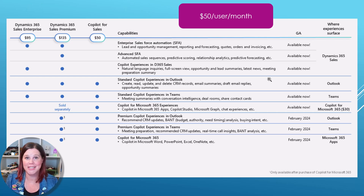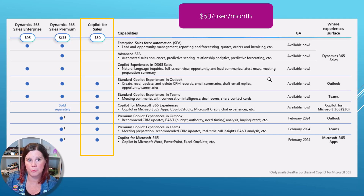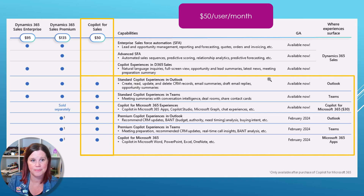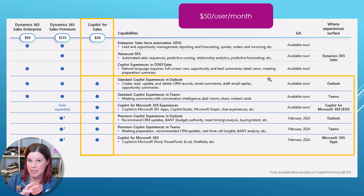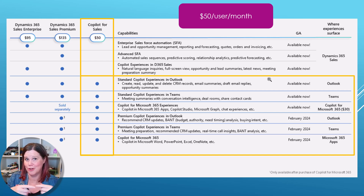Here's how you buy it. If you have Salesforce, or if you have none of this capability yet, you can buy this SKU for $50 per user per month. What you're getting for that is all of these things: the standard and premium experiences in Outlook as they come through, the Teams standard and premium experiences, as well as Copilot with your CRM data in Word, PowerPoint, Excel, OneNote, etc. — there'll be a big roadmap around all of that.